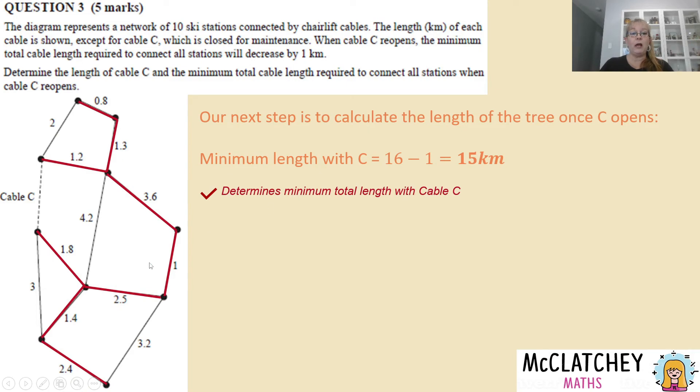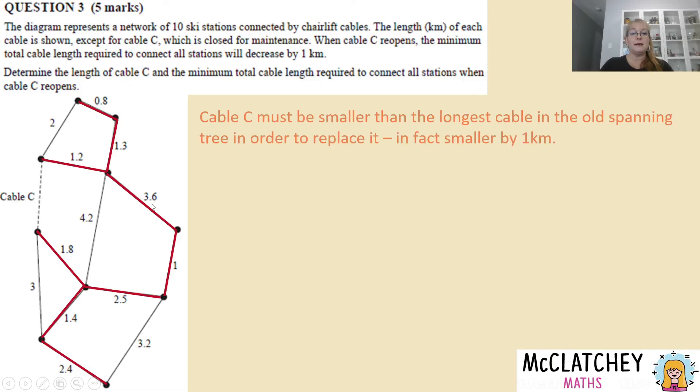So if I look through it all of my long lengths here the one I would be removing would be the biggest one here and that is 3.6 kilometers and Cable C is going to replace this one. And when I remove that from the network and redraw Cable C in the difference is going to be one so 3.6 take away one kilometer is 2.6 kilometers. And now I have determined the length of Cable C and therefore I have done what I've been asked to do and I've been achieving my last mark.